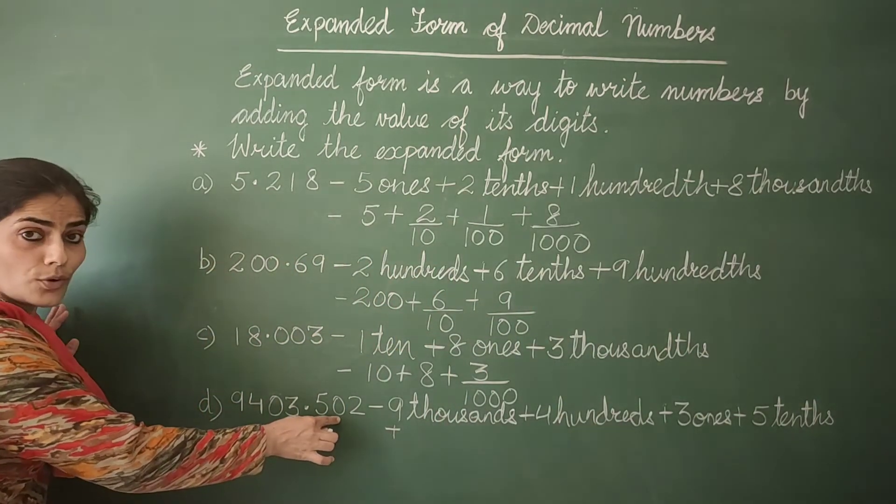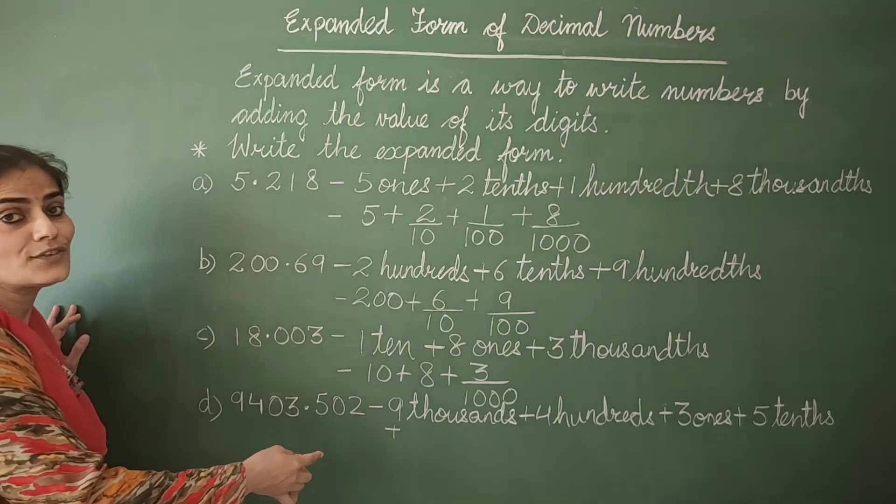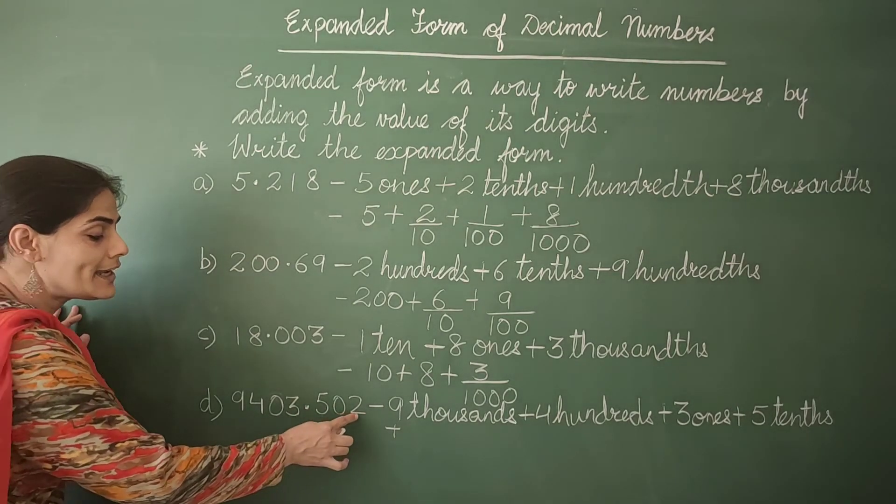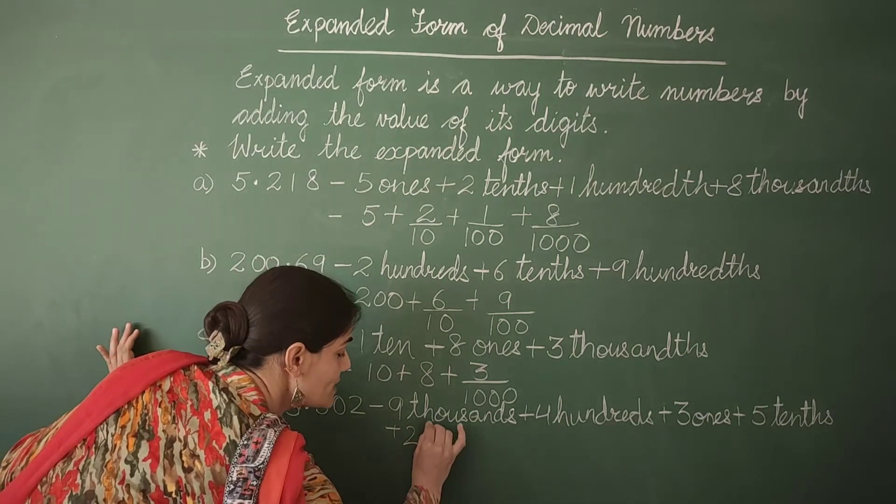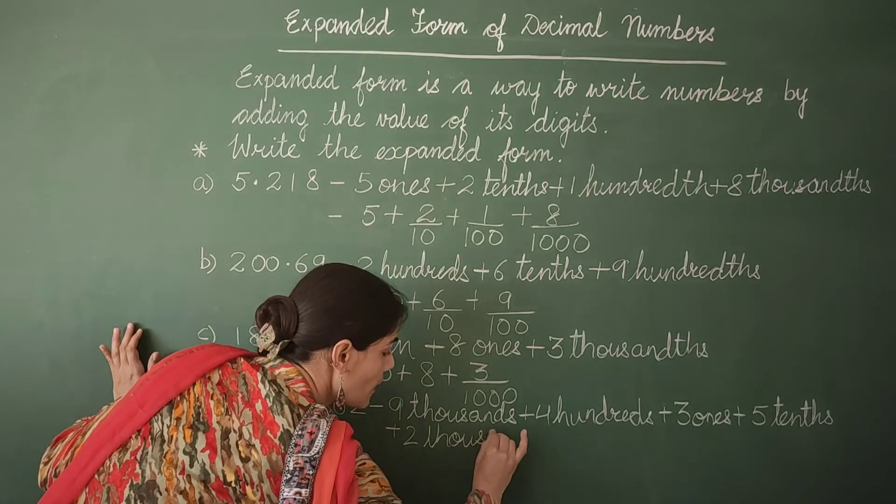Plus 0 hundredths. So if you want, you can. If you don't want, leave it. Now we move to the next digit. It is 2 thousandths. So I write here 2 thousandths.